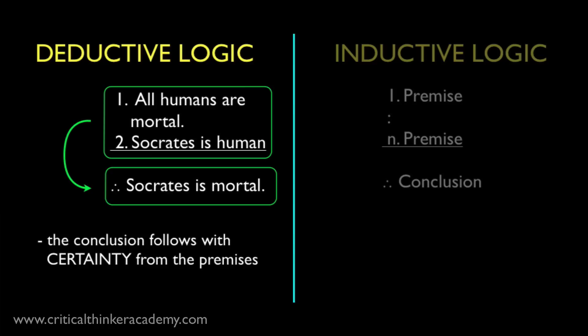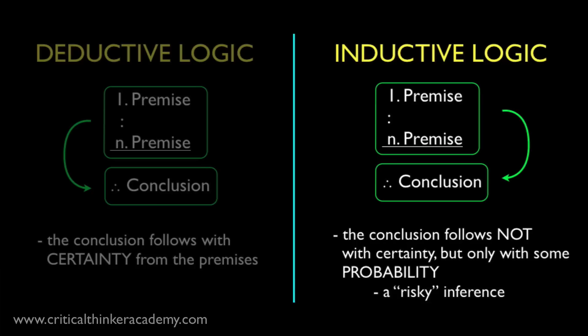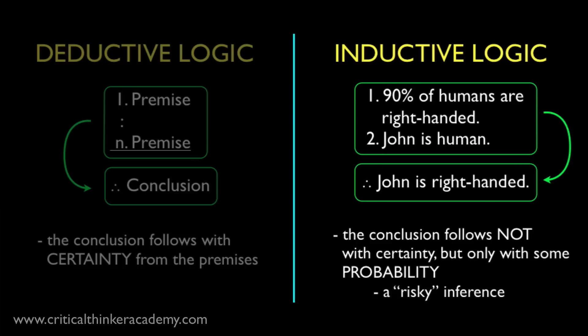Now, by contrast, with inductive arguments, we don't expect the conclusion to follow with certainty. With an inductive argument, the conclusion only follows with some probability, some likelihood. This makes it a risky inference in the sense that, even if the premises are all true and we're 100% convinced of their truth, the conclusion that we infer from them could still be false. So there's always a bit of a gamble involved in accepting the conclusion of an inductive argument.